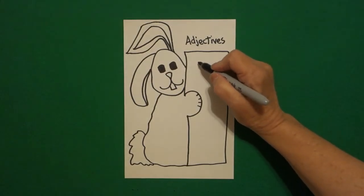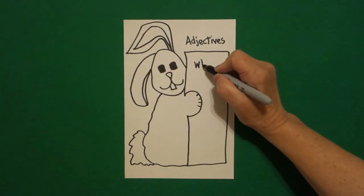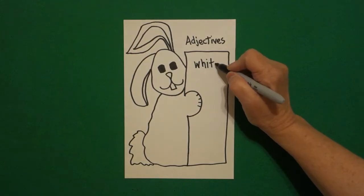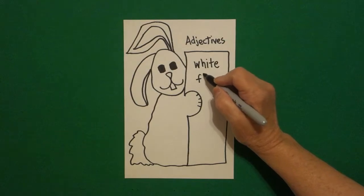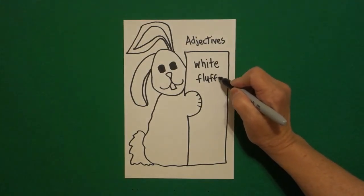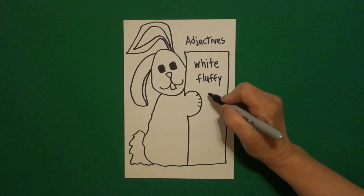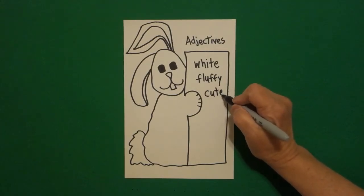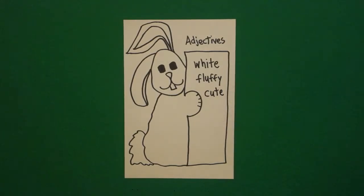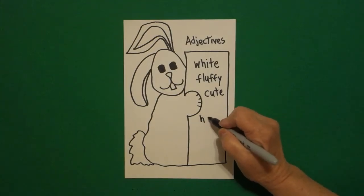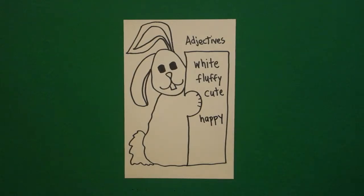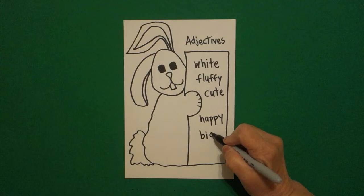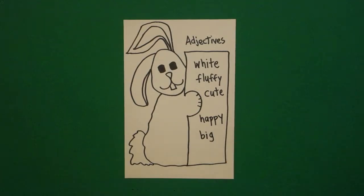The first thing I'm going to do is color. And he is white. Next, he looks like he's fluffy, how he feels. So I'm going to write fluffy. He's awfully cute, so I'm going to write cute. These are all adjectives: cute bunny, white bunny, fluffy bunny. He's obviously happy because he's smiling. Happy bunny. He looks pretty big, so I'm going to put big. And he hasn't said a word, so I'm going to say that he's a quiet bunny.